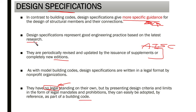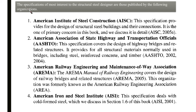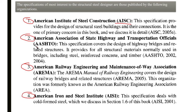By presenting design criteria and limits in the form of legal mandates and prohibitions, specifications can easily be adopted by reference as part of the building code. That is the key difference between building codes and specifications. Now let's look at the specifications of most interest to the structural steel designer.